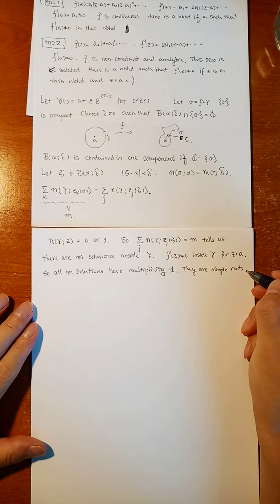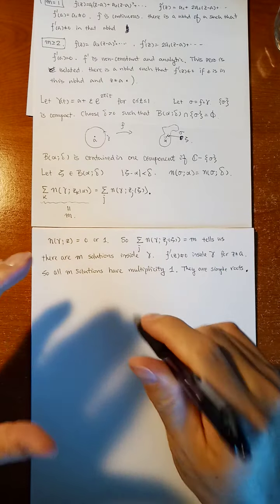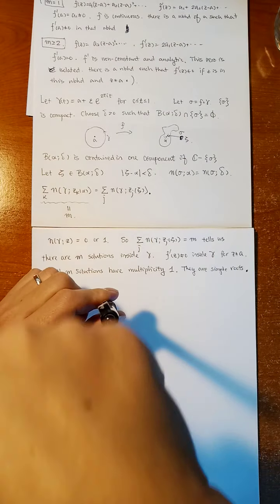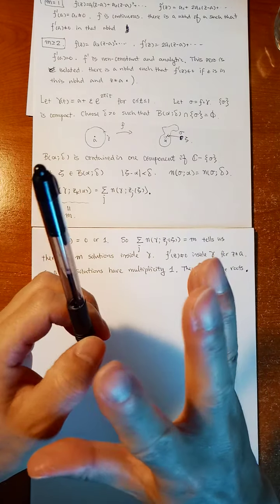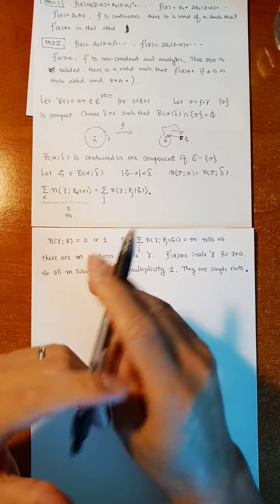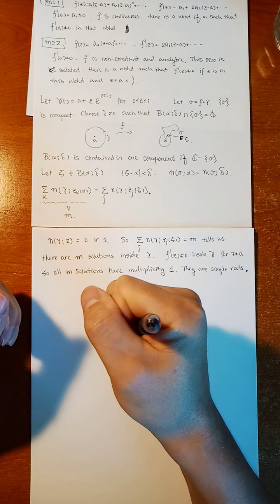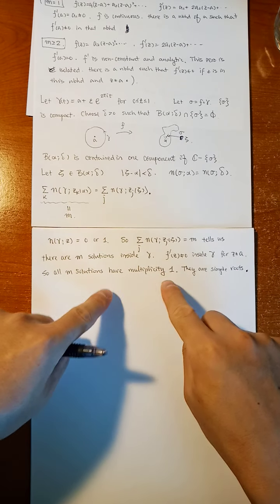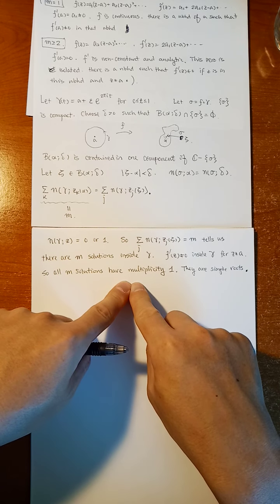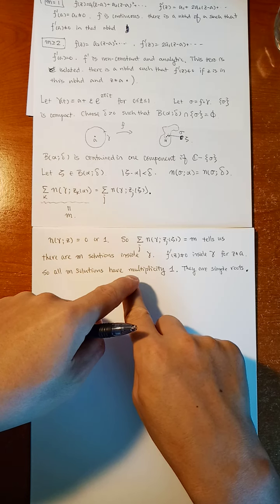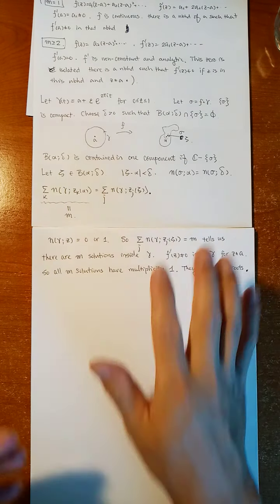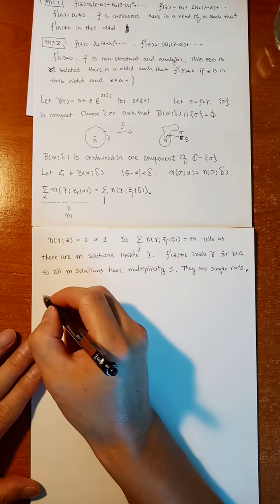The theorem tells us that when you have a solution with large multiplicity, inside a small neighborhood this repeated multiplicity is 'untied.' A multiplicity greater than one means the solutions are tied together originally; with nearby values of eta they separate into M distinct isolated simple roots. That is the idea of Theorem 7.4.